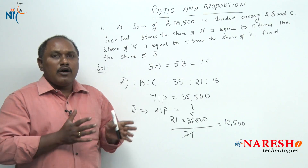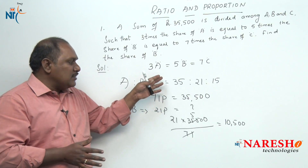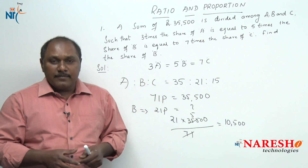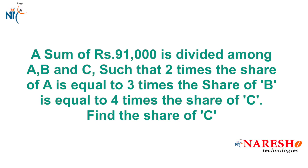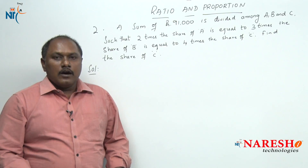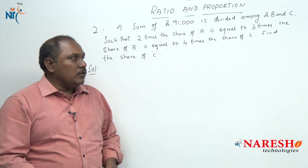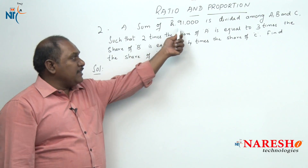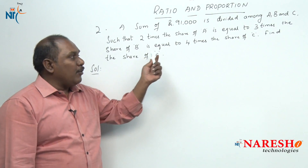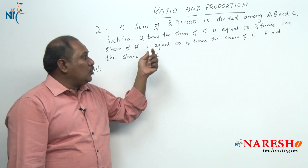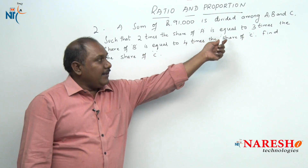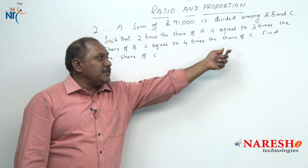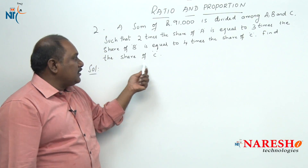Let us take one more example of the same model and try to answer the question using this method, so that we can answer it quickly. The second problem: a sum of rupees 91,000 is divided among A, B and C such that 2 times the share of A is equal to 3 times the share of B is equal to 4 times the share of C. Find the share of C.